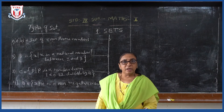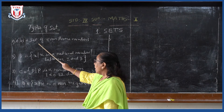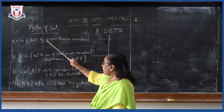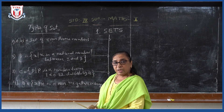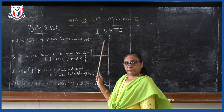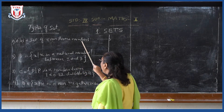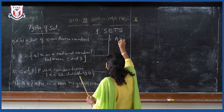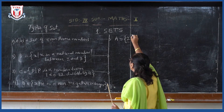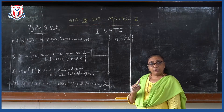We are going to see the types of sets now. I have written some examples here. See the first example: A is a set of even prime numbers. If I want to write this set in the listing method, A is equal to what? Which is an even prime number? 2. So it consists of only 2, meaning it consists of only one element.